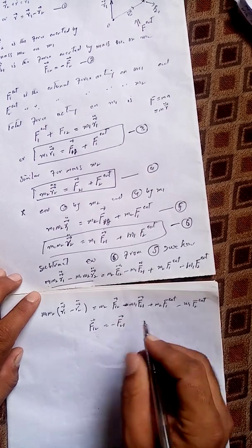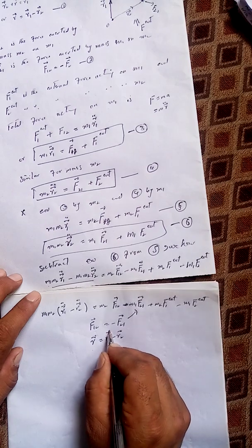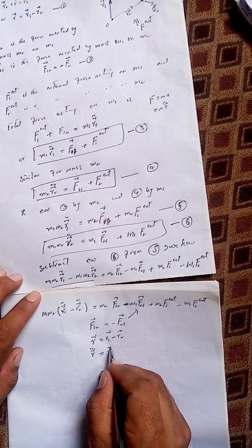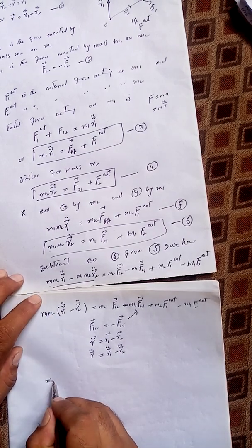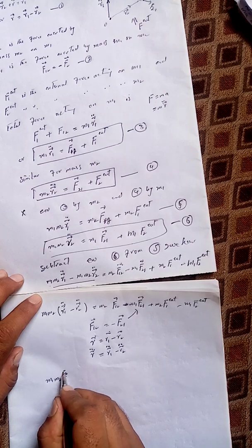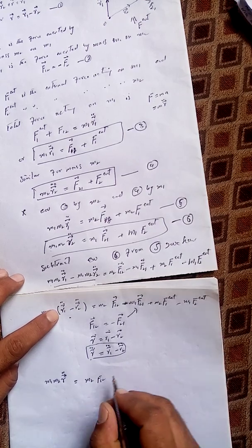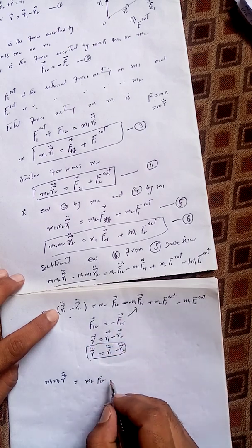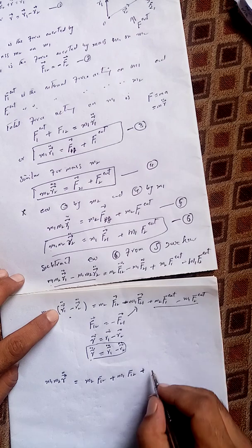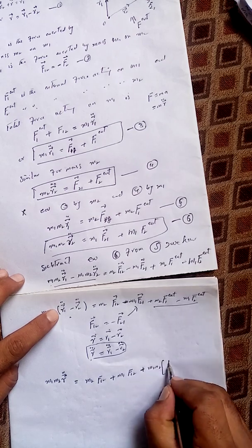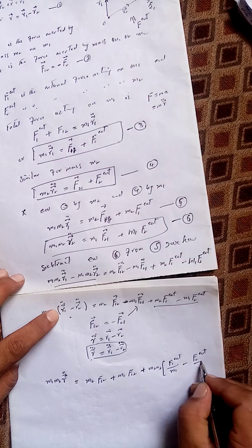We know that F12 equals negative F21, and also r equals r1 minus r2, so taking the double derivative gives r double dot equals r1 double dot minus r2 double dot. Substituting these into the equation and using F12 equals negative F21, the internal force terms become m2 F12 plus m1 F12, which equals (m1 plus m2) F12. So we get m1 m2 r double dot equals (m1 plus m2) F12 plus the external force terms.